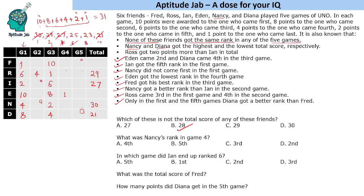For game five, Dinah must score better than Fred. The values left for Dinah are 6, 2, or 1. She cannot get 1 since that can't beat Fred, and she cannot get 2 because Fred already got 1 in game one making it impossible. So Dinah gets 6 points and Fred gets 2 points in game five. The remaining values of 1 and 2 are then placed: 1 is already present in one slot, so 2 goes there and 1 goes to the remaining position.